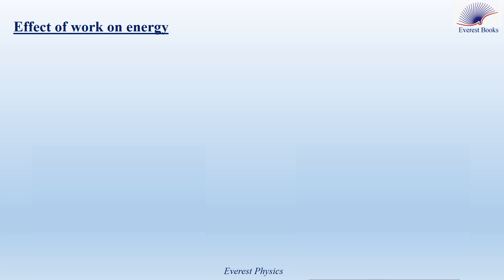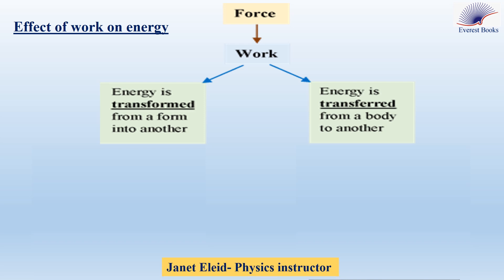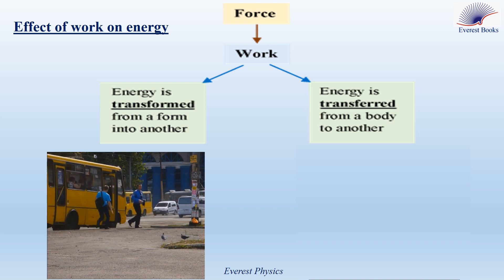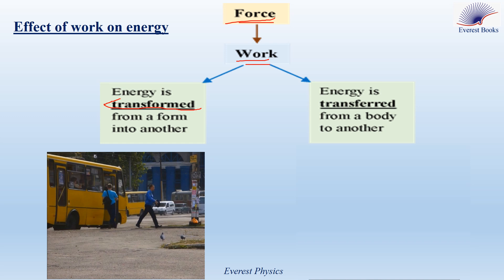Before moving to the potential energy, let's discuss the effect of work on energy. When a force performs work, energy is transformed from one form into another, or energy is transferred from one body to another. For example, the yellow bus stops under the action of resistive friction. The resistive friction force performs work, and this work results in a transformation of the kinetic energy into thermal energy.